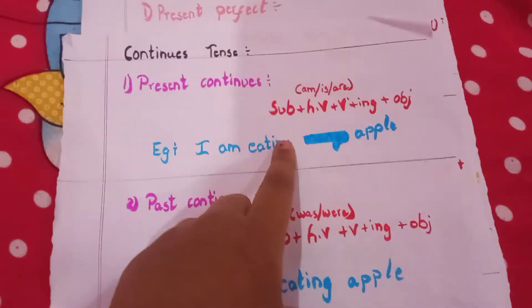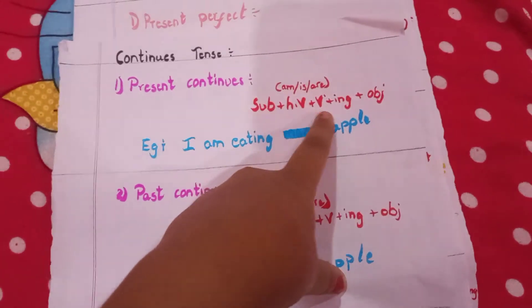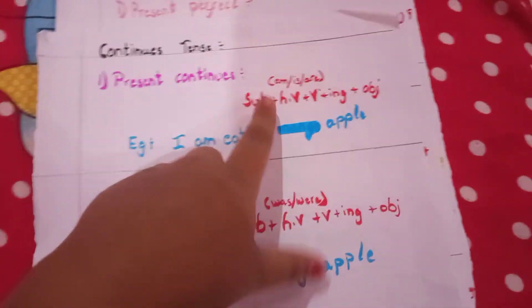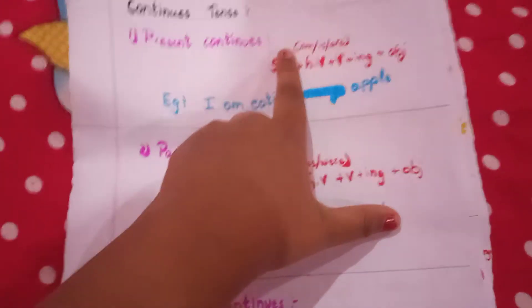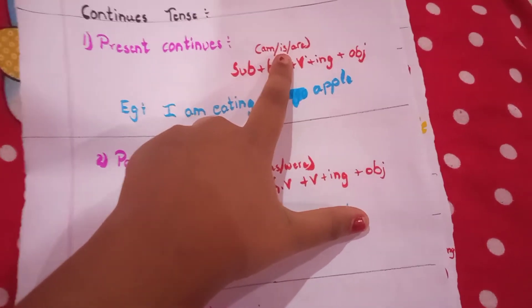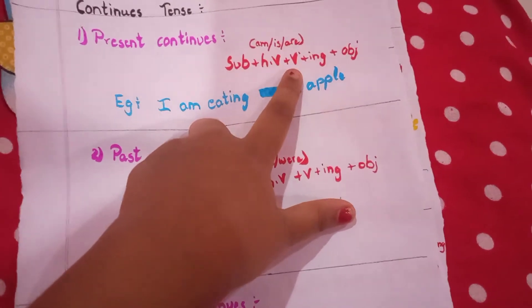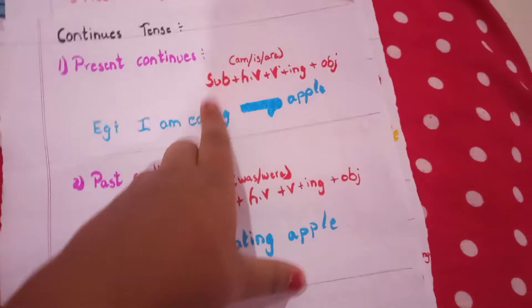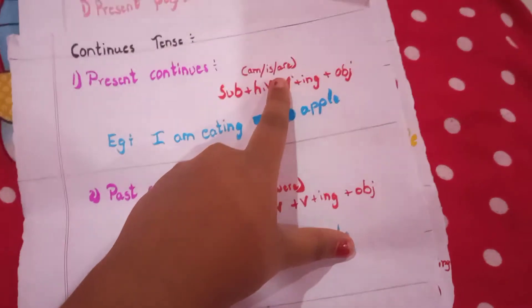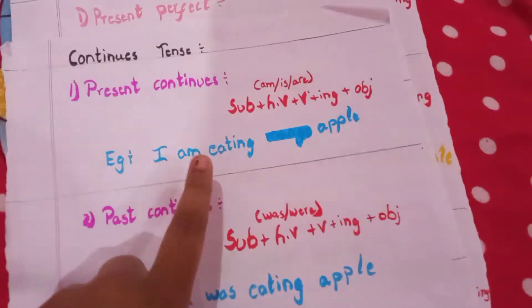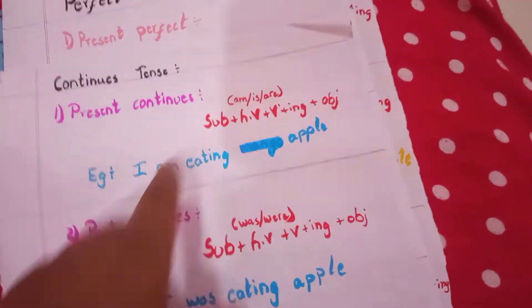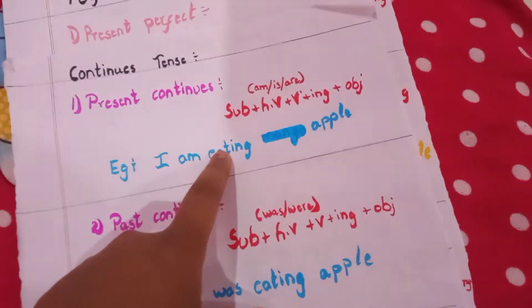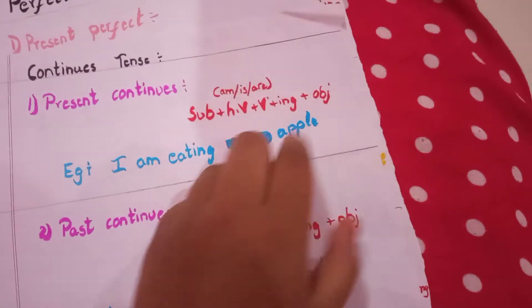Next, continuous tense — present continuous. The formula is subject plus helping verb plus V4 plus object. The helping verbs are am, is, and are. We use 'am' with I; 'is' with he, she, it; and 'are' with you, we, they. V4 means we add '-ing' to the verb. Example: 'I am eating apple.' 'I' is the subject, 'am' is the helping verb, 'eating' is V4 (eat + ing), and 'apple' is the object.